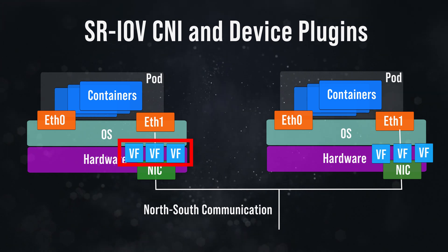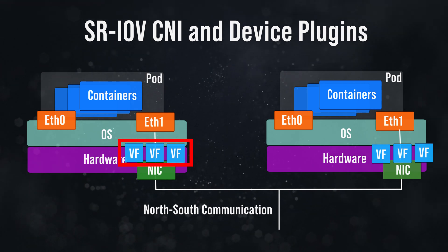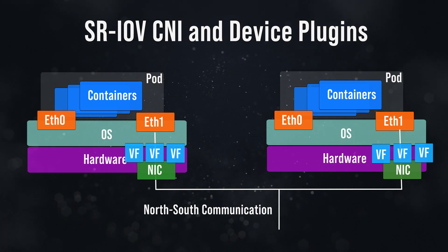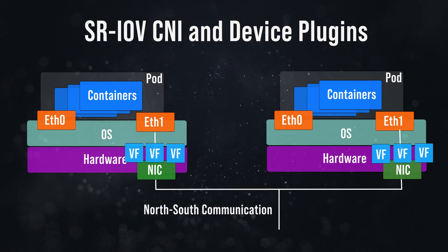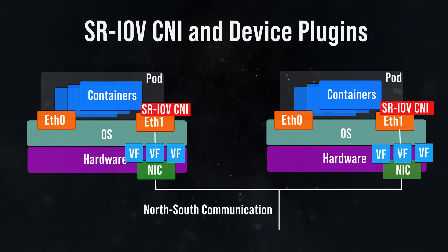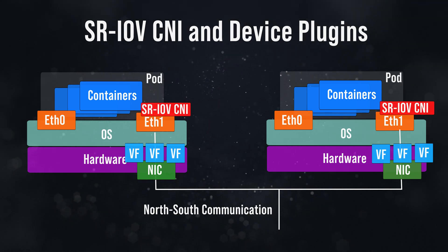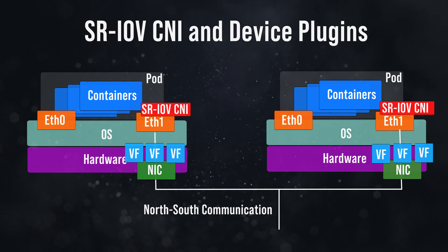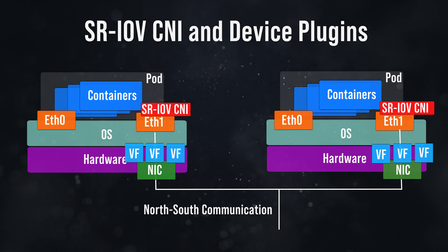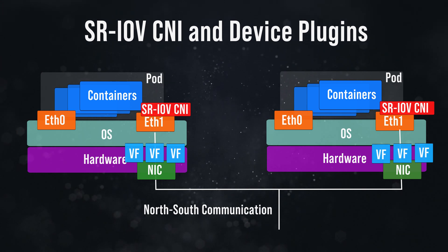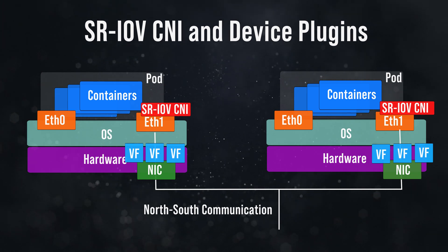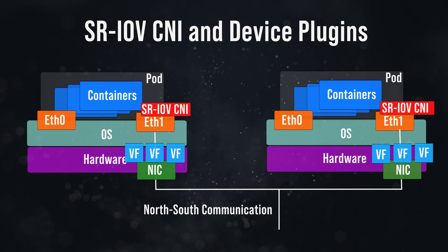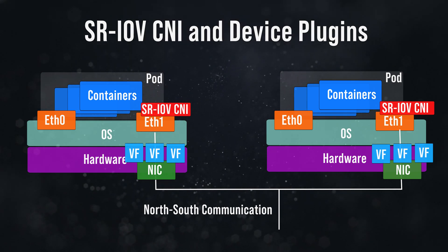A PF is a host-managed unit, often representing an individual network interface card port. Virtual function settings are controlled via the physical function. The SRIOV CNI Plugin's function is to treat each virtual function as an independent network interface, allowing it to be assigned to a container and configured with specific attributes like MAC address, VLAN settings, IP addresses, and more.